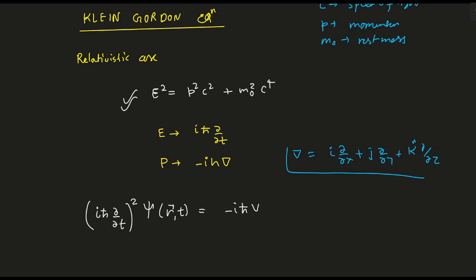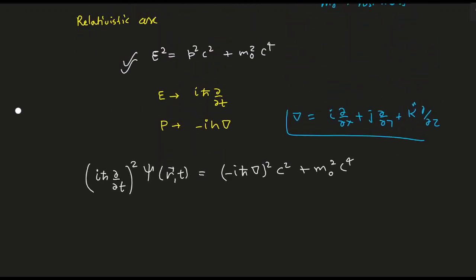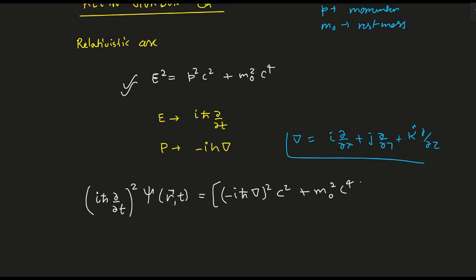Similarly P is replaced by minus iℏ del, giving us del² C² plus M₀² C⁴. Let's solve it further. All of this gets operated on the wave function ψ of R, t.